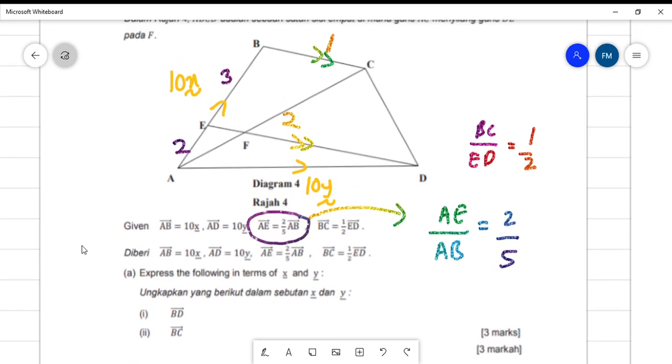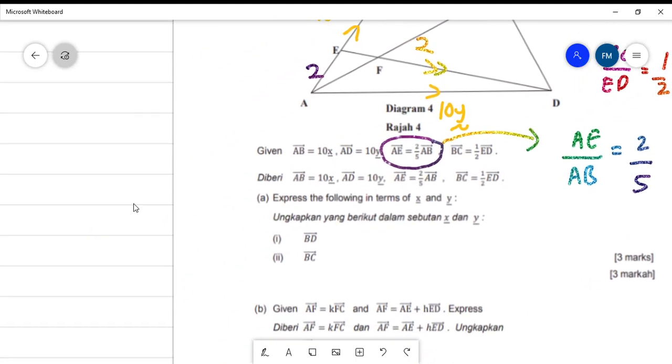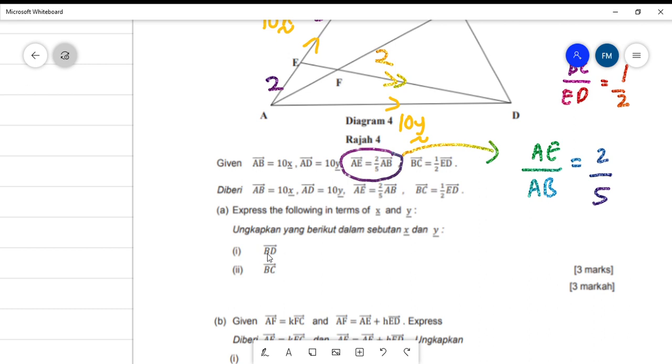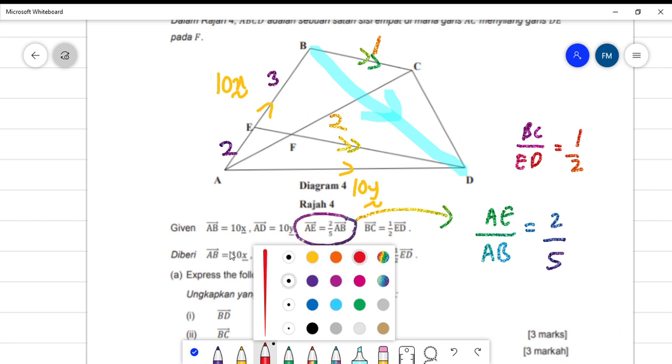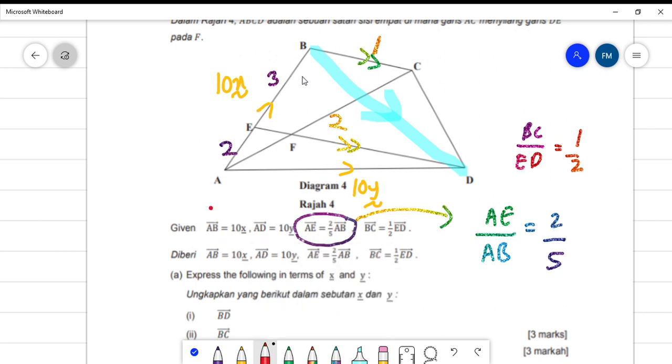Then express the following: BD. So we have BD here. Look at your diagram. If you can use the path that already has a value, you can use this path. BD is equal to BC plus CD, but you don't have any vector here, you don't know any value of this vector, so don't use this part.